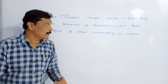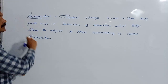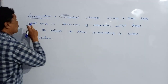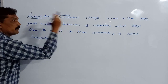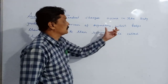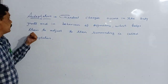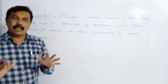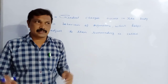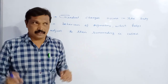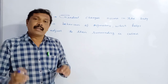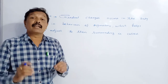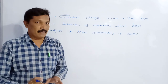Again, what is adaptation? Gradual changes occur in the body parts and in the behaviour of organisms which help them to adjust to the surrounding is called as adaptation. Adaptation is a long process. It is a gradual change. It is not a sudden change. It helps the organism to adjust to the surrounding in order to survive.